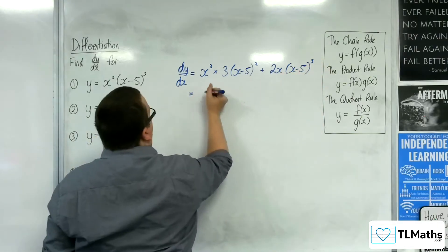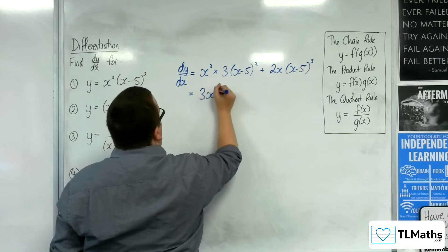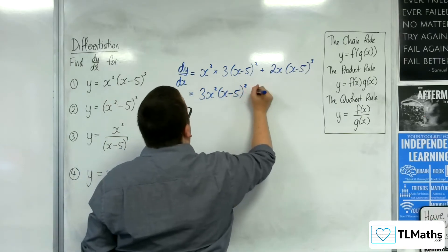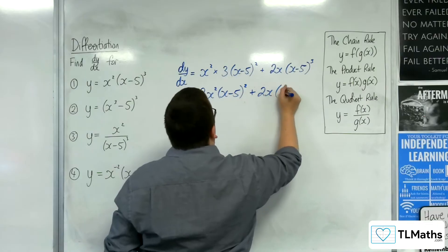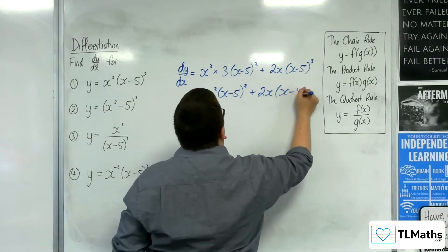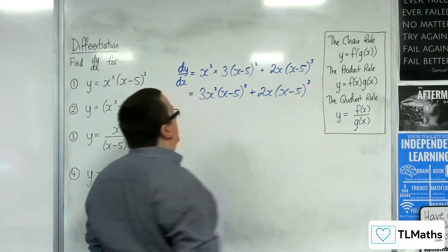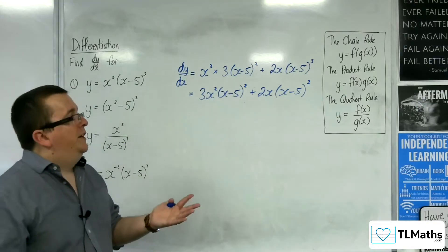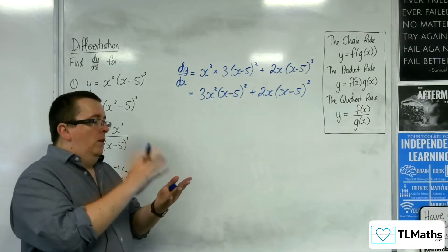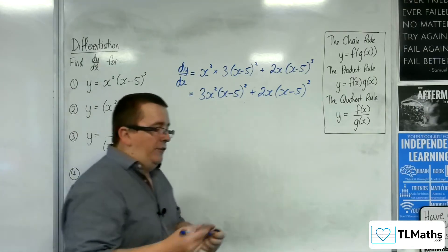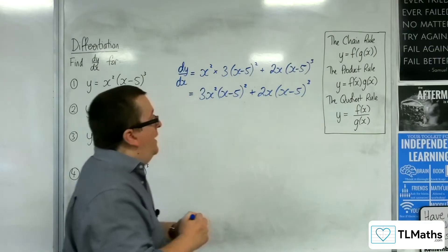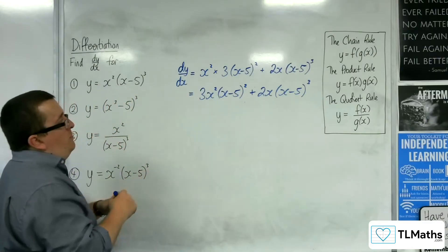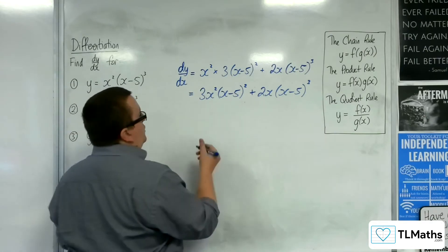Plus the second times the derivative of the first — the first differentiates to 2x, and we've got x minus 5 all cubed. Tidying that up: 3x squared (x minus 5) squared plus 2x(x minus 5) cubed. And if you wanted to find stationary points, you'd have to factorise this.